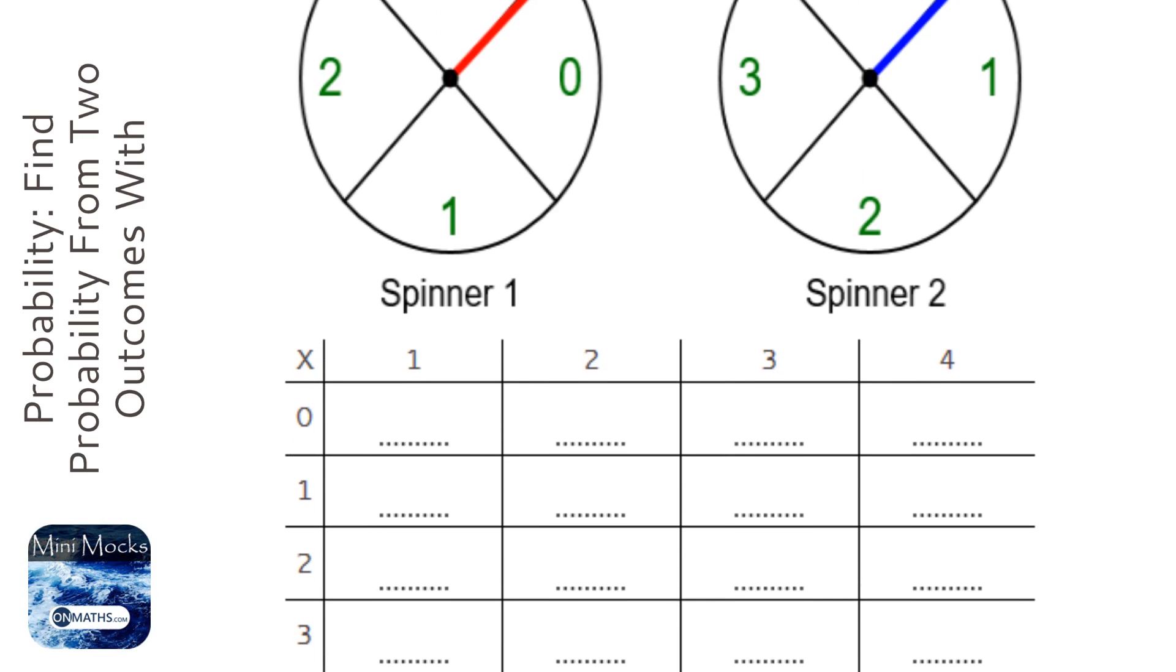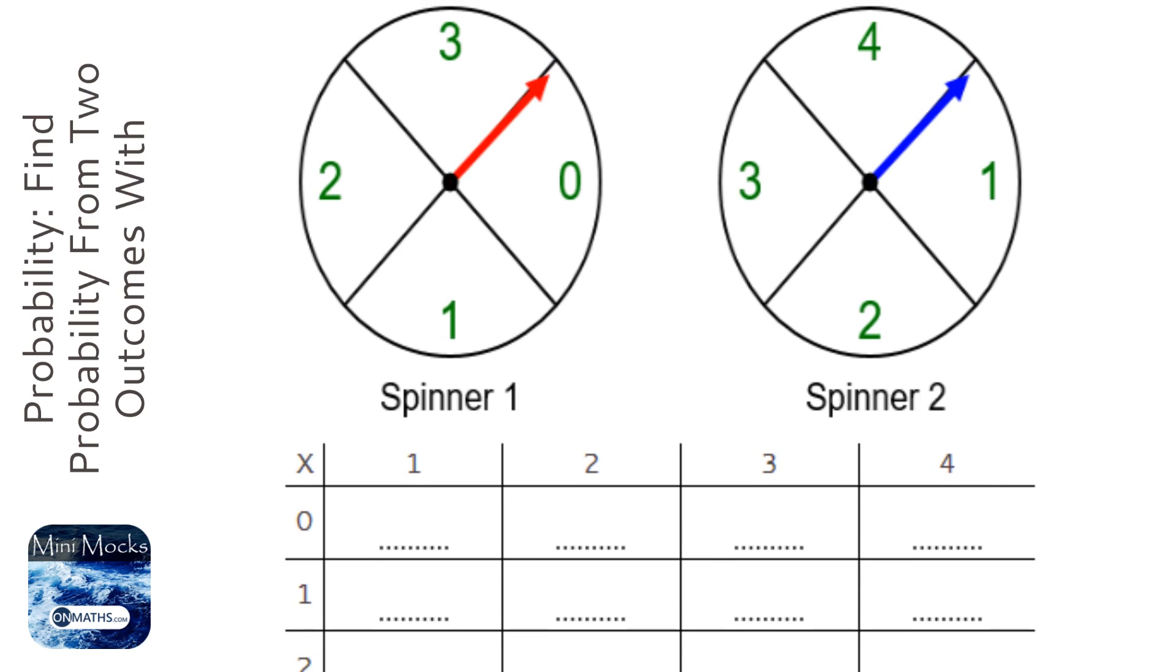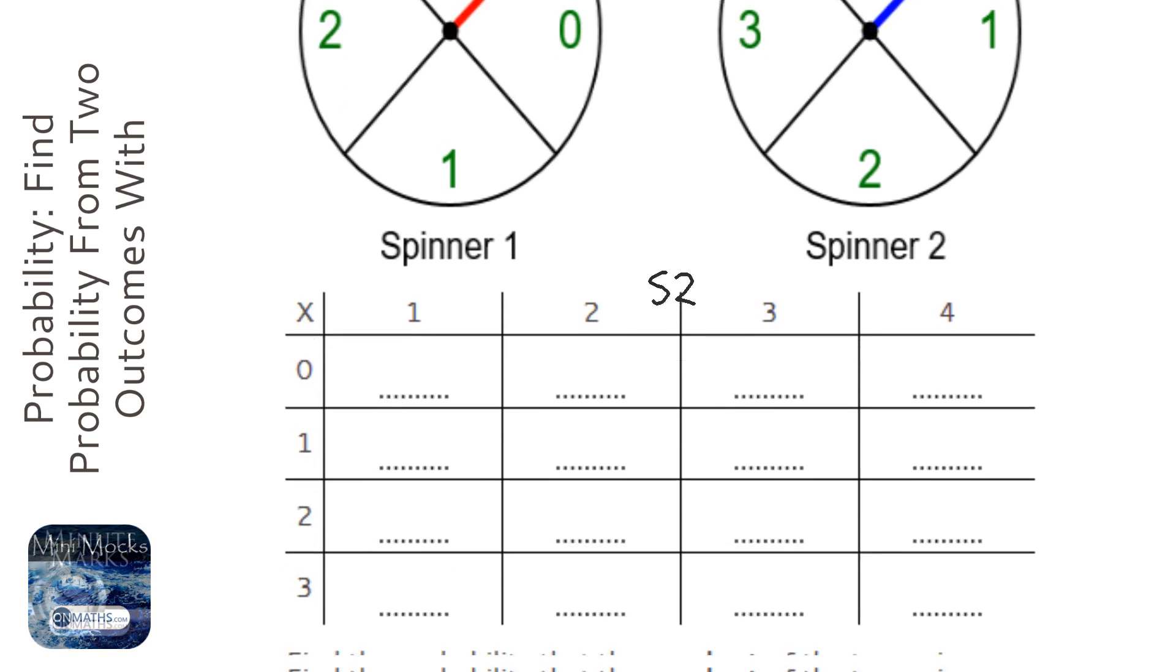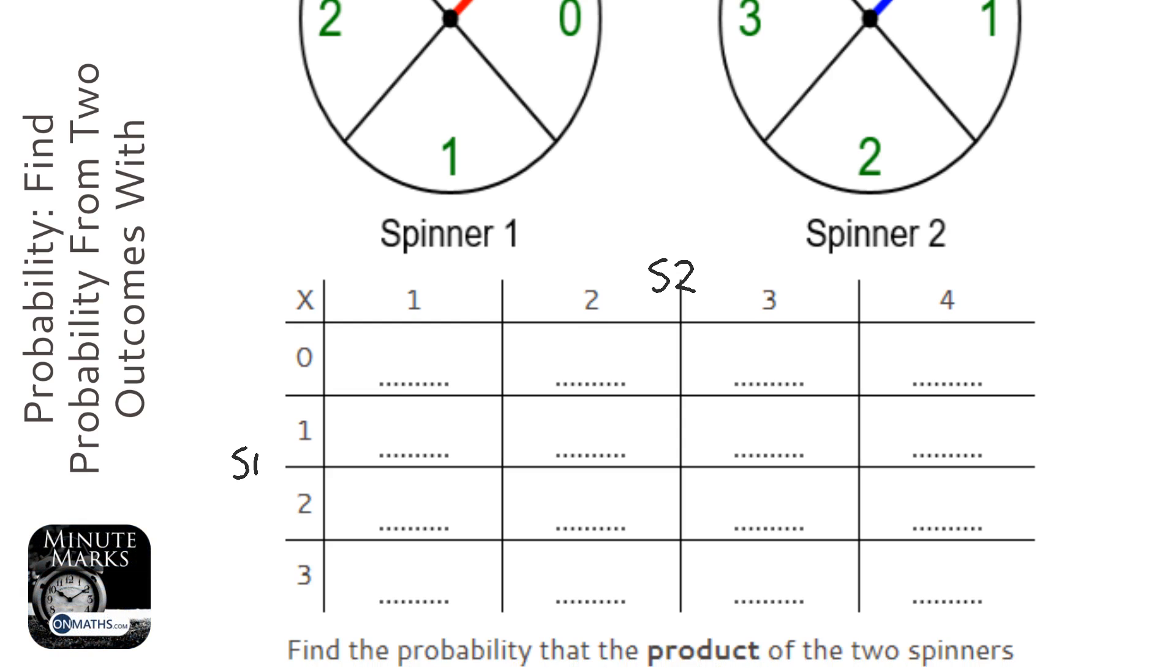So we've got the numbers from spinner two up here and the numbers from spinner one here. But instead of writing down the combinations, we're just going to write down the answers to the product.